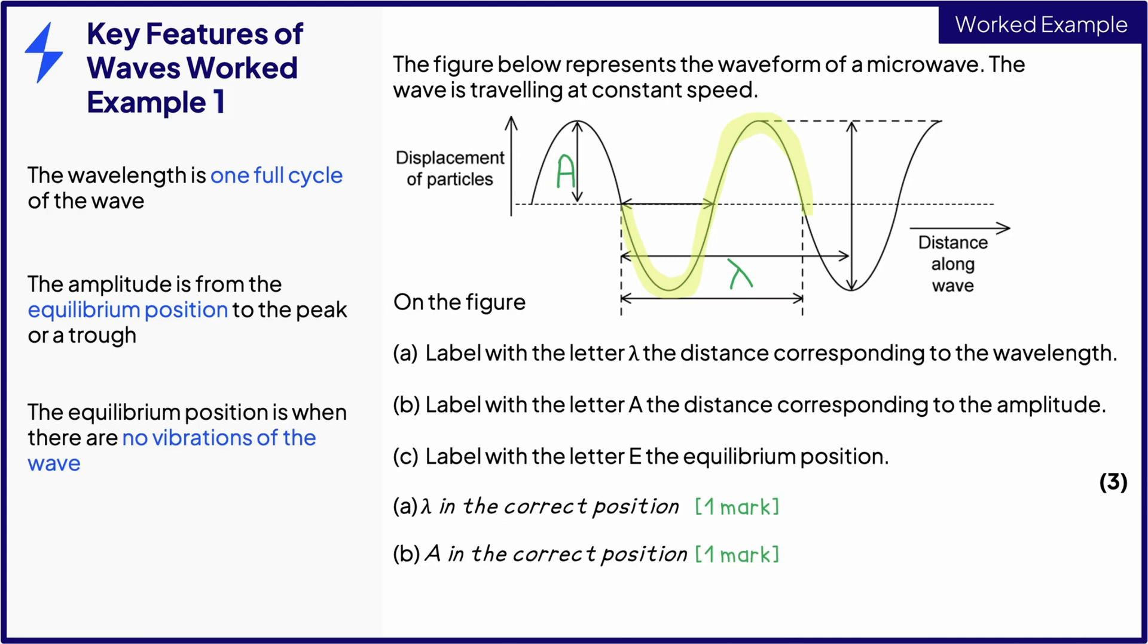For C, the equilibrium position is where there are no vibrations of the wave, i.e. the amplitude is zero. This is any point along this line. This is the third and final mark.